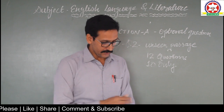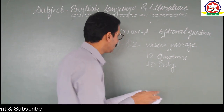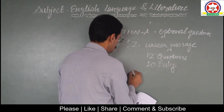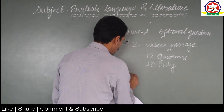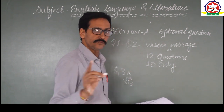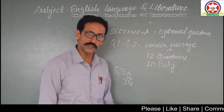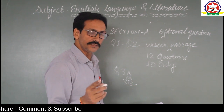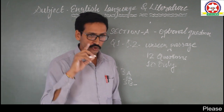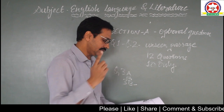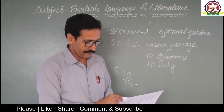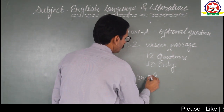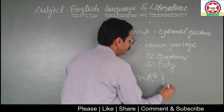Question number 3 is related to literature. It has two parts: 3A and 3B. You have to perform either question 3A or question 3B. Be careful — the B part may be intended for visually impaired students or visually impaired candidates. Questions 3 and 4 are both from literature.